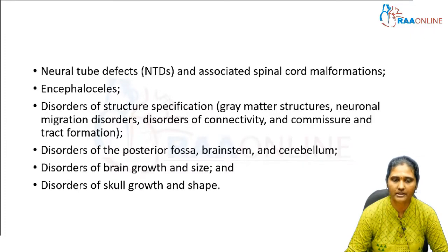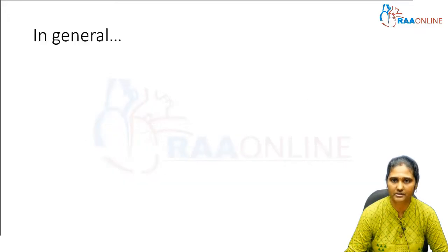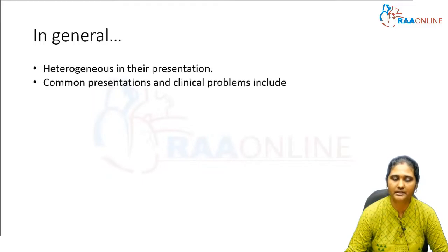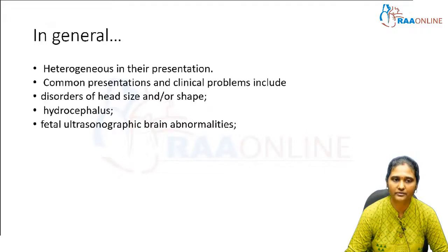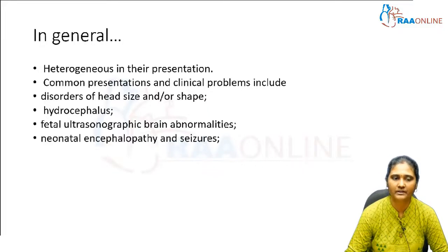In general, all congenital anomalies of the central nervous system are heterogeneous in their presentation. Common clinical presentations include disorder in head size or abnormal shape, hydrocephalus plus or minus, and fetal ultrasonographic brain abnormalities detected at the time of antenatal screening. Neonatal encephalopathy or neonatal seizures may also be present.